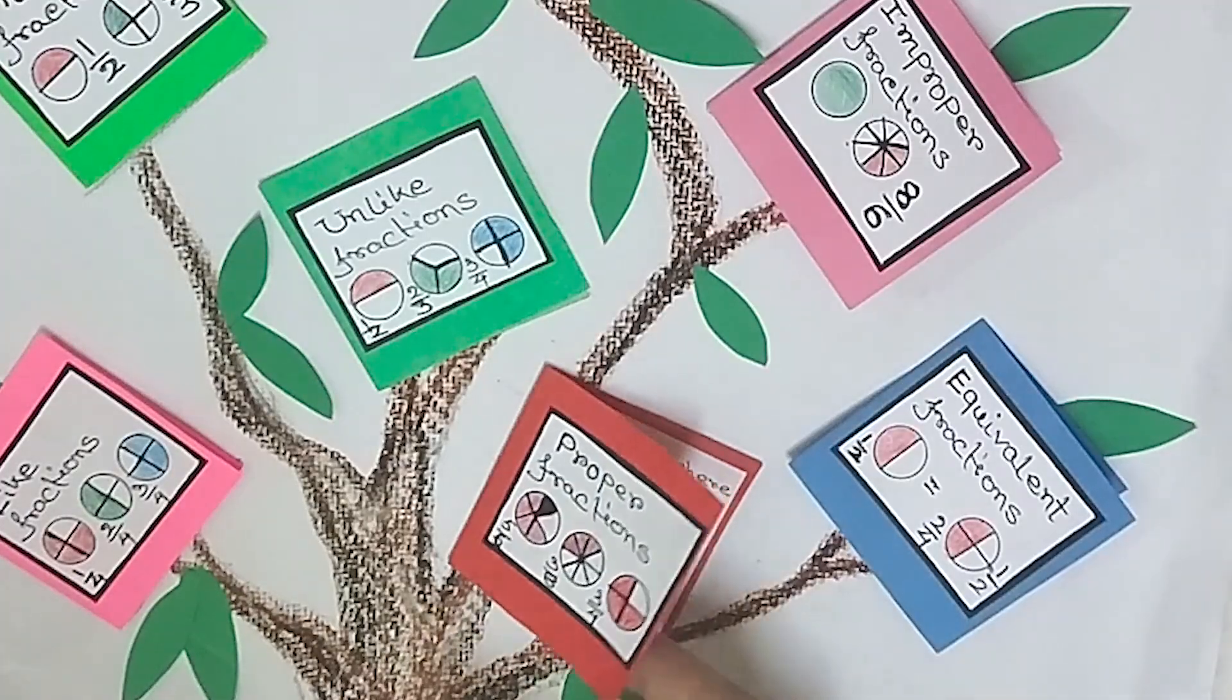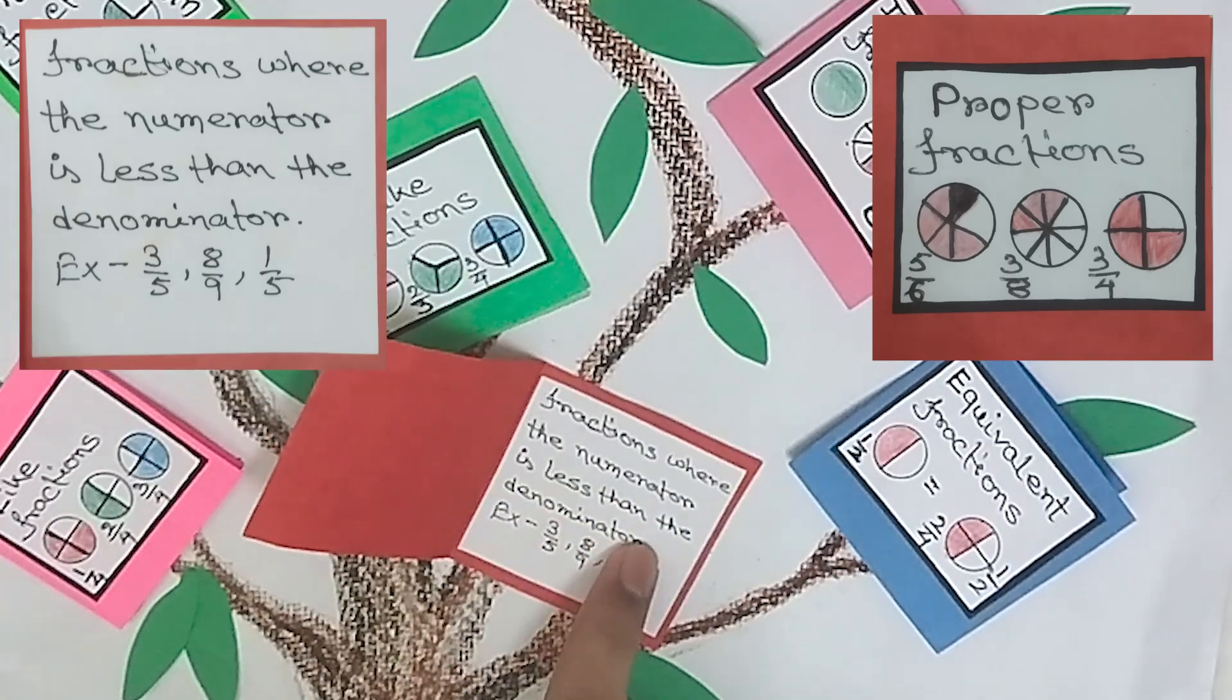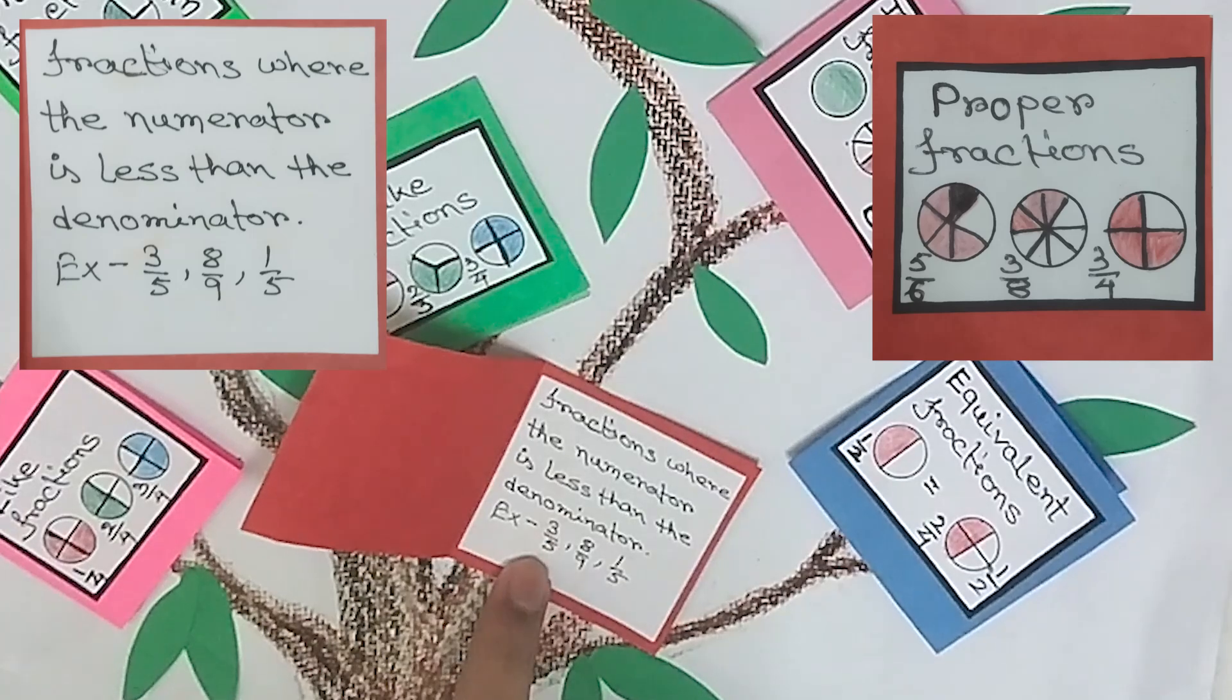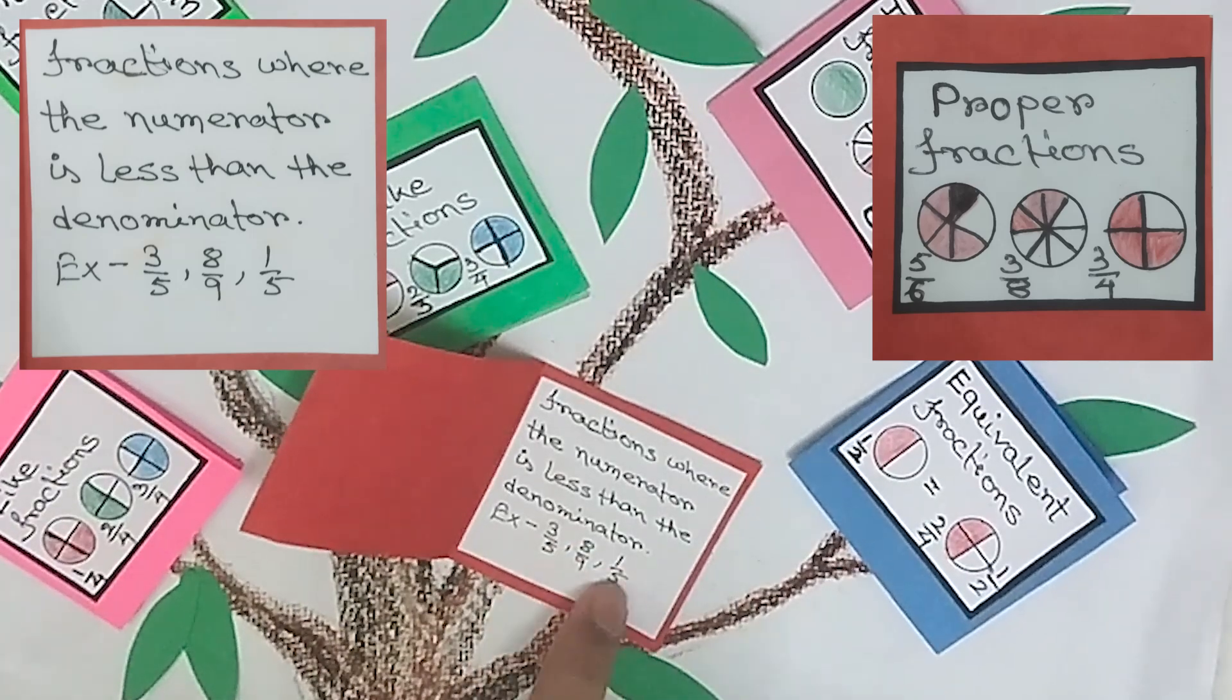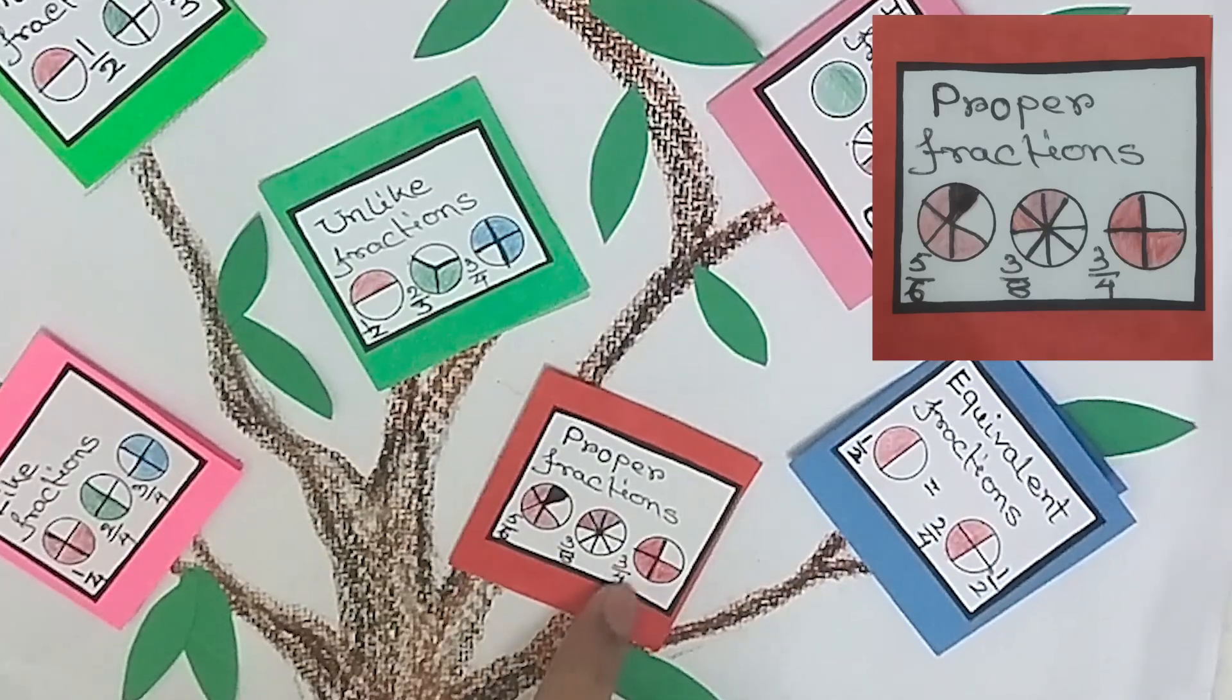Next we have proper fractions. Fractions where the numerator is less than the denominator. Example: three by five, eight by nine, one by five. Here we have five by six, three by eight, three by four.